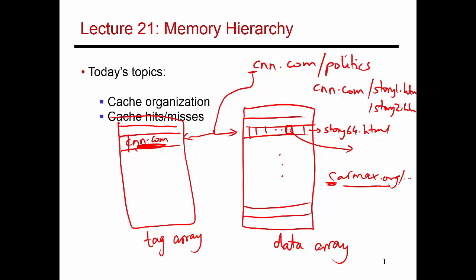In this example, in this organization, I can only accommodate one website with each starting letter. So essentially the whole cnn.com website has to be evicted to make room for this new website that I'm now accessing. So cnn.com gets evicted and the entire carmax website gets placed into that third entry. And I will update my tag to say that what is sitting here is now rmax.org. Again I took out that initial C because it is redundant.